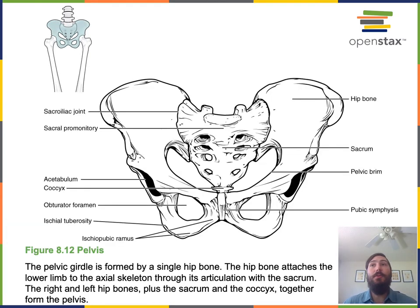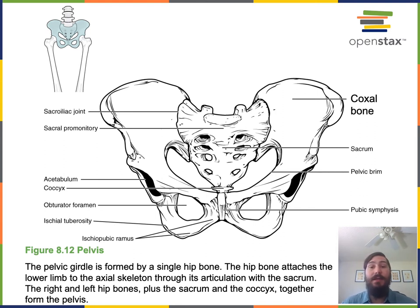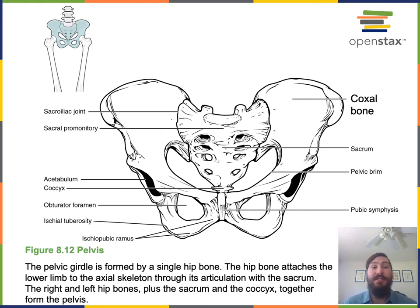Moving down to the lower limbs, the pelvic girdles are also known as the coxal bones, or more commonly the hip bones. Each coxal bone is formed from three bones that fuse together: the superior region is the ilium, the inferior anterior region is the pubis, and the inferior posterior region is the ischium. There are two coxal bones, a right and a left, and they contact the sacrum to form the sacroiliac joint, which connects the lower limb to the axial skeleton.